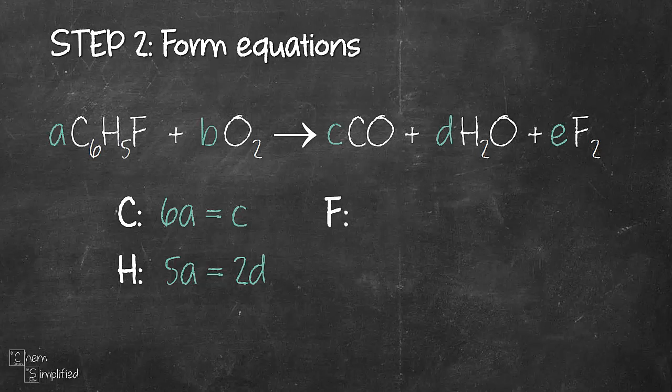Next, for fluorine there's only 1F on the left, multiply with A that gives us 1A. On the right-hand side there are 2F, multiply with E and it will give us 2E. Our third equation is going to be A equals 2E.